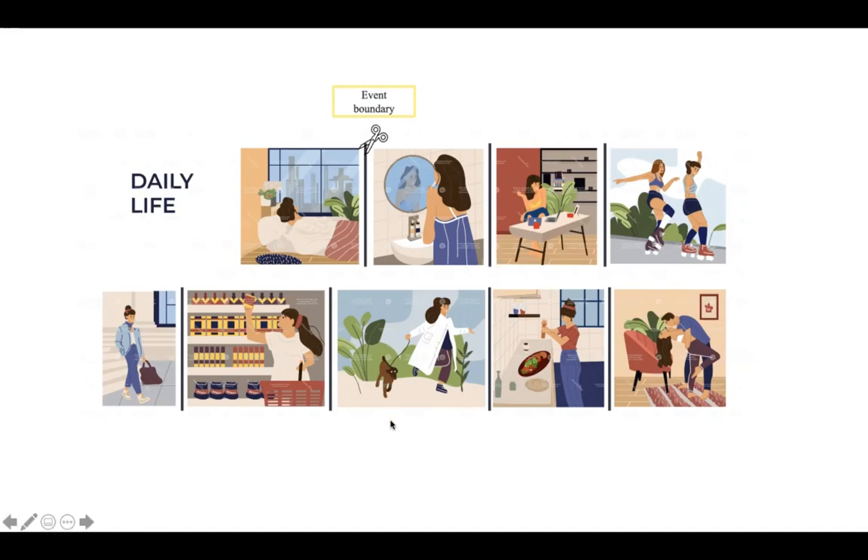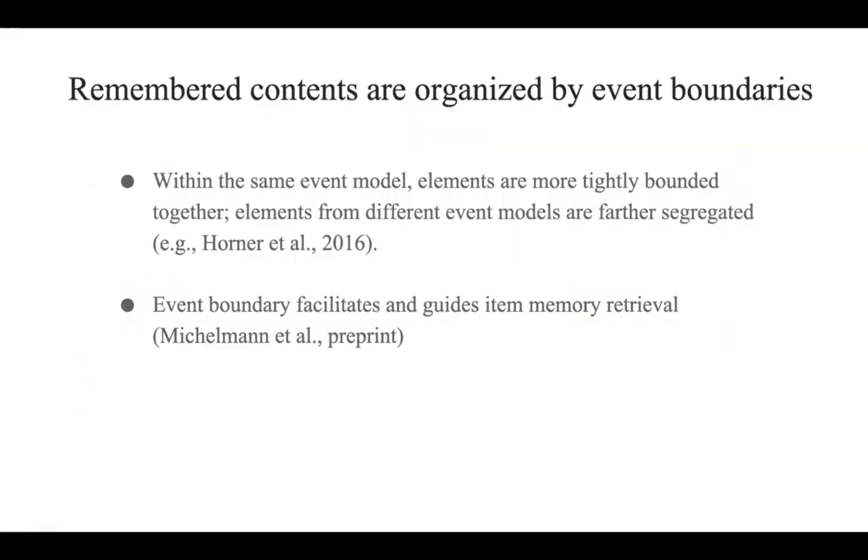A door and a wall is one of the commonest event boundaries. A lot of previous studies have showed that our memories could be organized by these event boundaries. Elements coming from the same events are more likely to be bonded together than elements coming from different events.